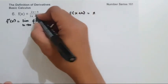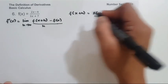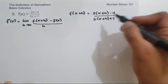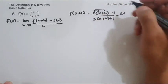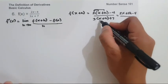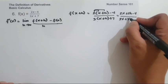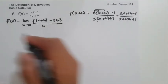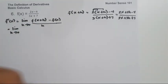f of x plus h is: 2 times (x plus h) minus 4, all over 3 times (x plus h) plus 7. Expanding: the numerator becomes 2x plus 2h minus 4, and the denominator becomes 3x plus 3h plus 7. This is the value of f of x plus h.